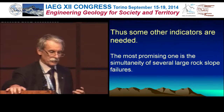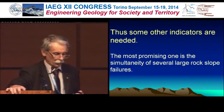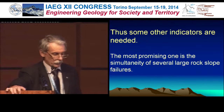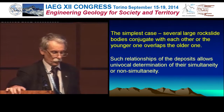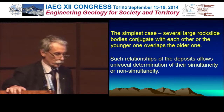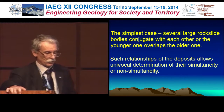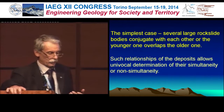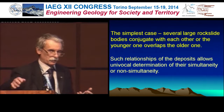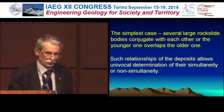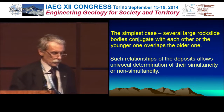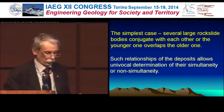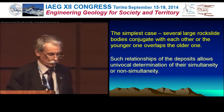Thus we need some other indicators. The most prominent one is the simultaneity of several large rock slope failures — the simplest case where several large rock slide bodies are conjugated with each other and we can determine if one is younger than another or they occurred at the same time. Such relationships of deposits allow unequivocal determination of their simultaneity or non-simultaneity.